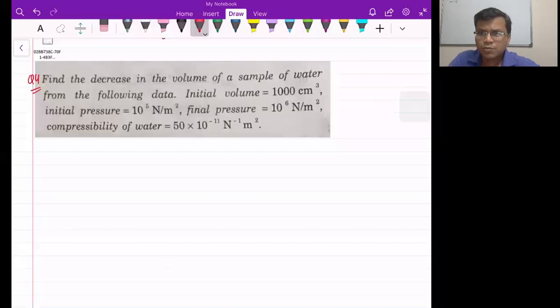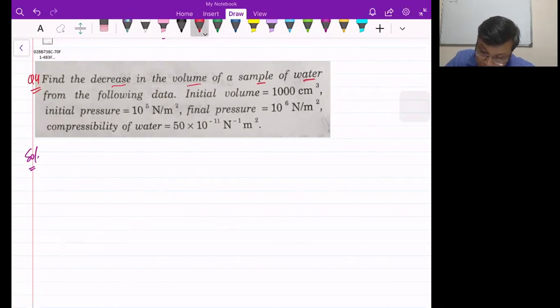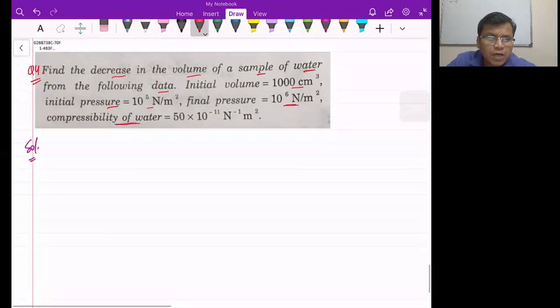Now question number 4, we will find the decrease in the volume of a sample of water from the following data: initial volume, initial pressure, final pressure and compressibility of water. So here the definition is compressibility.